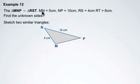We know that MN, this side here, is 5 centimeters, and NP, this side here, is 10 centimeters. We don't know the third side.